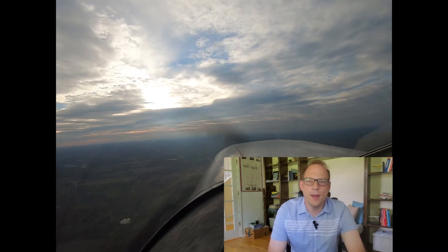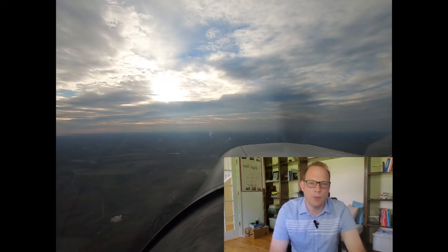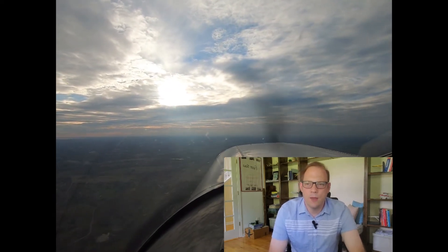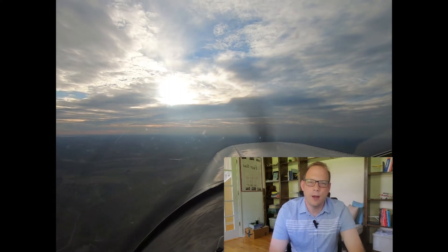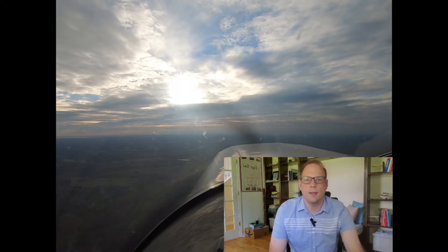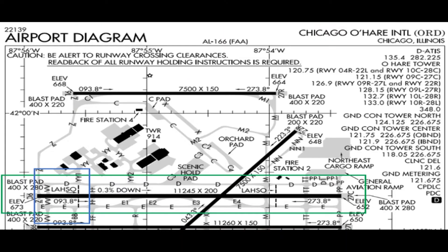Another way to find the LASSO landing distance available is by referencing the chart supplement — the little green book, also free online. In the chart supplement, you can see on the airport diagram where the LASSO line is on the runway. In our Chicago example, the aircraft was cleared to land runway 27 center and hold short of Victor Victor for crossing traffic. The LASSO hold short line indicators cross the runway where the aircraft needs to stop or exit, with taxiway Victor Victor near the end of that runway.